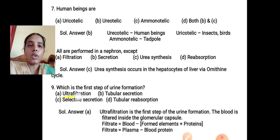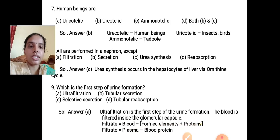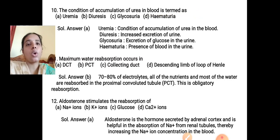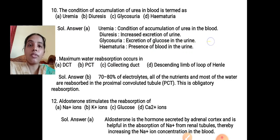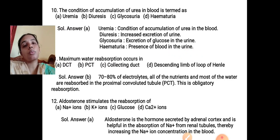MCQ 9: The first step of urine formation is ultrafiltration, where blood is filtered inside the glomerulus capsule — correct answer is option A. MCQ 10: The condition of accumulation of urea in the blood is called uremia. Diuresis means increased excretion of urine; glycosuria is excess excretion of glucose in urine; hematuria involves presence of blood in urine. The correct answer is option A, uremia.